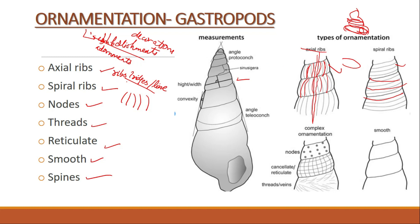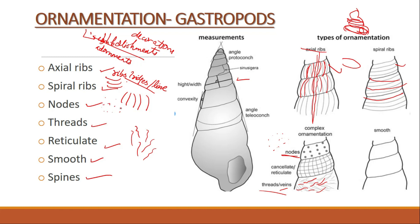Then we have nodes — these are small dots present on the shell. Next we have threads, also called veins, which are in the shape of threads. So axial ribs parallel to the axis, spiral ribs in a circular pattern, nodes like dots, and threads in a thread-like shape.